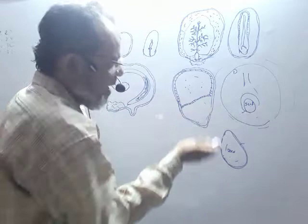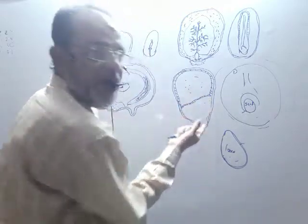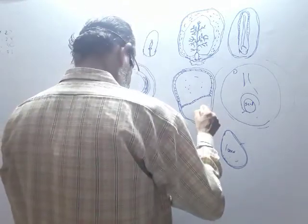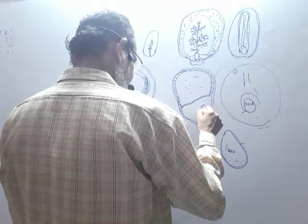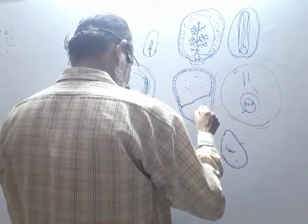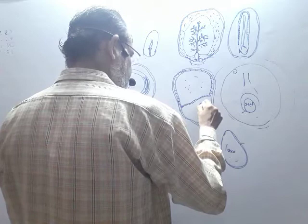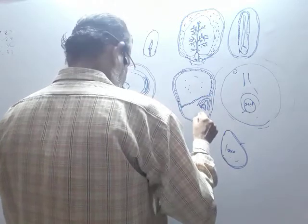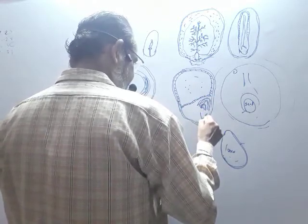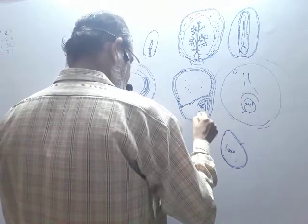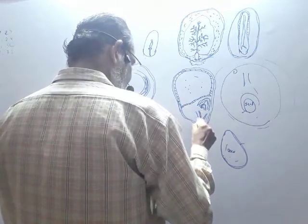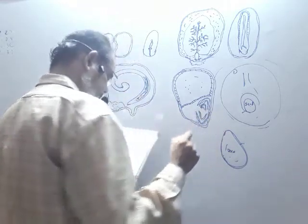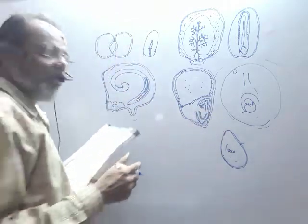Everything that was folded in front has been cut. What remains — this pen-like structure — is the embryo axis. In this embryo axis you can make out the plumule, as well as the extra covering — the coleoptile. And here is the radicle, along with its extra covering — the coleorhiza.